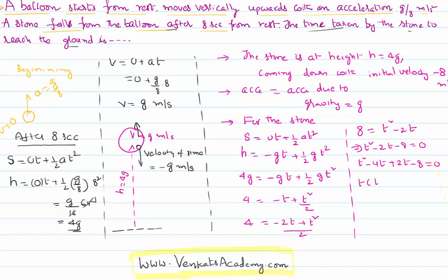So t(t - 4) + 2(t - 4) = 0. This is how we solve a quadratic equation, you learned it in school. So (t - 4)(t + 2) = 0. Therefore t = +4 seconds or -2 seconds. But time is never negative, it has to be positive.